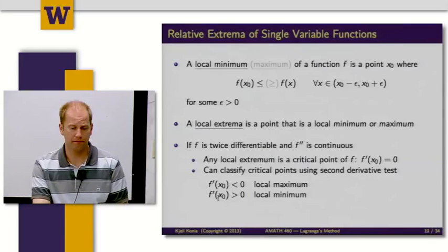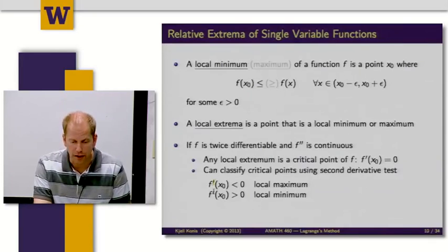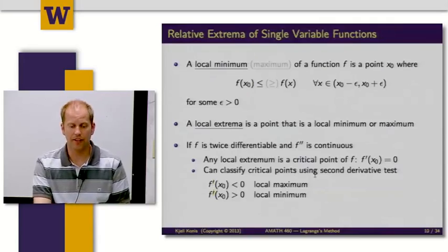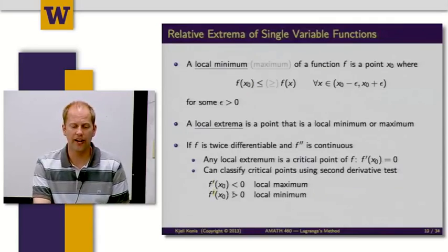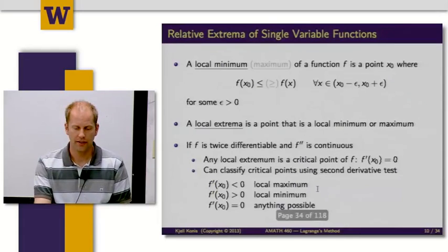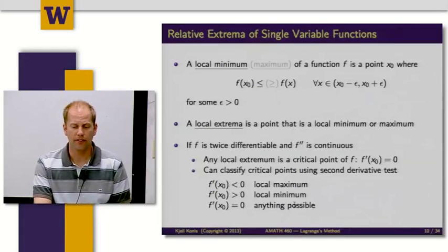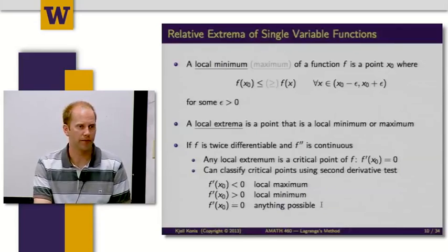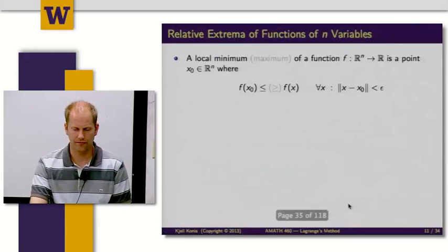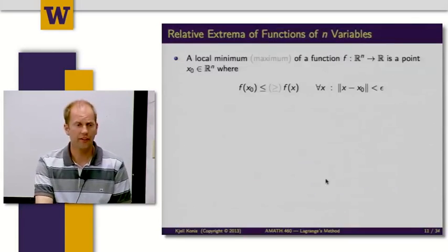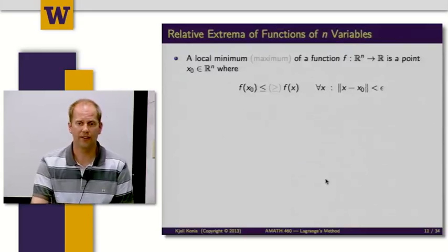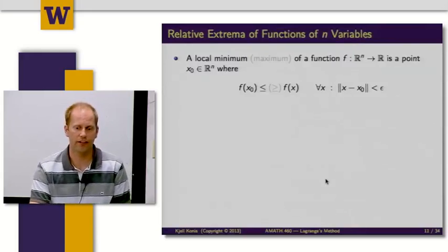If the second derivative evaluated at x0 is greater than 0, that's a local minimum. And if it's equal to 0, then anything is possible. That's a brief review of how this works for single variable functions.